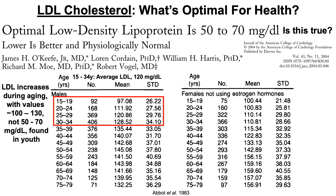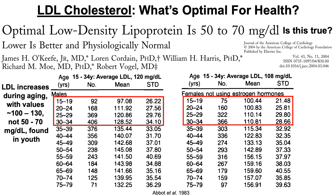What about for women? When looking at the data for women aged 15 to 34 years old, the average LDL is 108 milligrams per deciliter. So just looking at the aging data, the idea that the optimal LDL range is 50 to 70 is inaccurate.